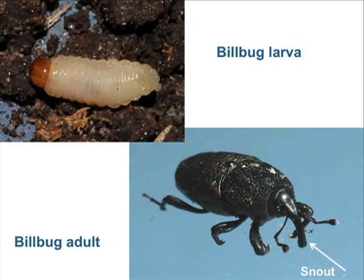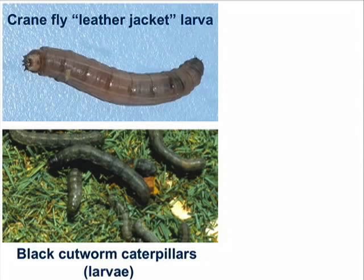A related insect, the annual bluegrass weevil, has these same features. Another difference is that the adult billbugs and weevils have a long, Jimmy Durante-like snout. Still, despite these differences — the lack of legs and the very different appearance of the adult snout beetles — billbug and weevil larvae can also be correctly referred to as grubs.